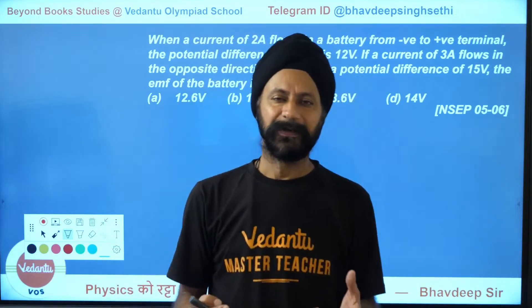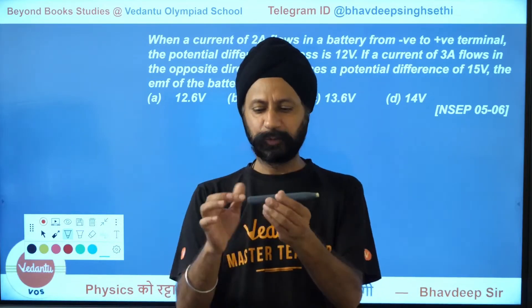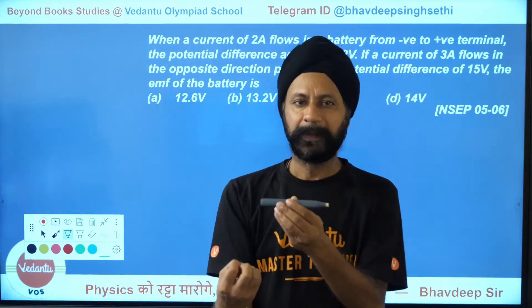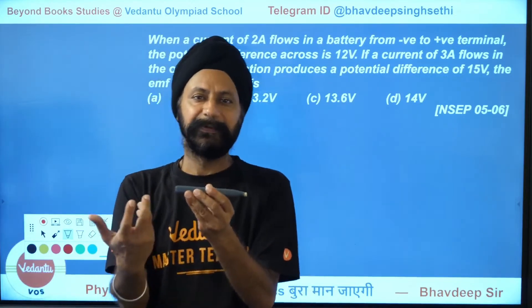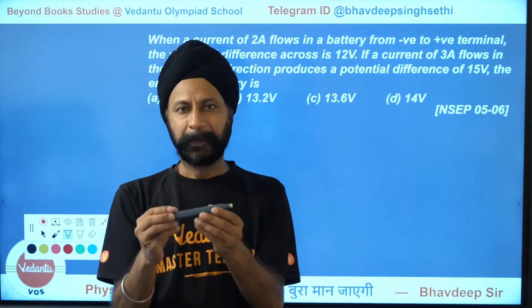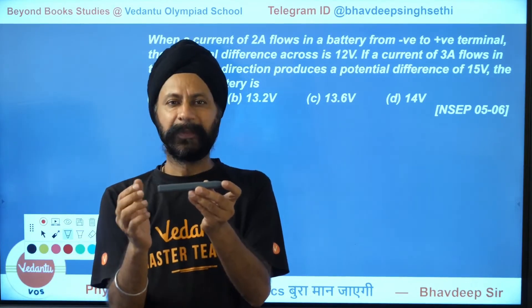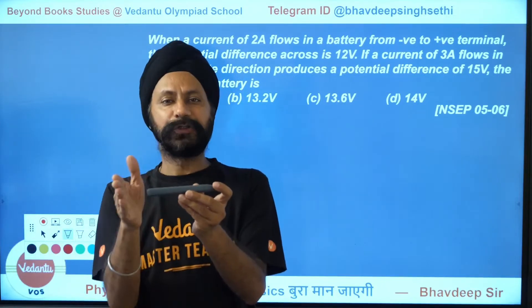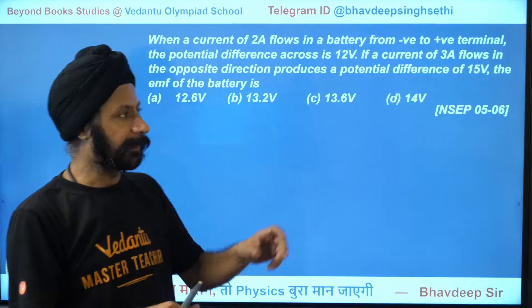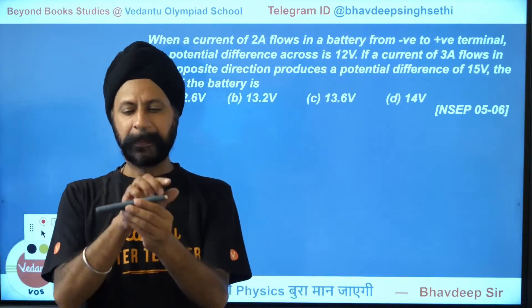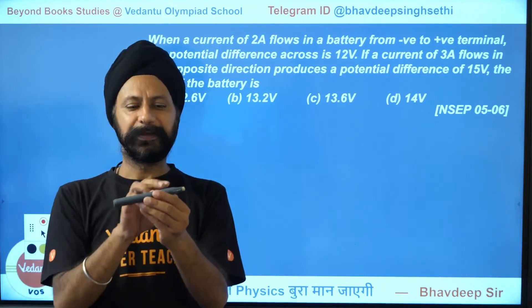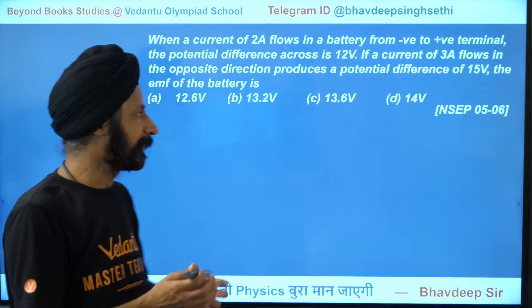When you're charging a battery, you make the current flow in the other direction. When discharging, terminal voltage is less than EMF — say 5.4 V for a 6 V battery. But when charging, the current flows the other way and terminal voltage is more than EMF, more than 6 V. That's what is happening here.